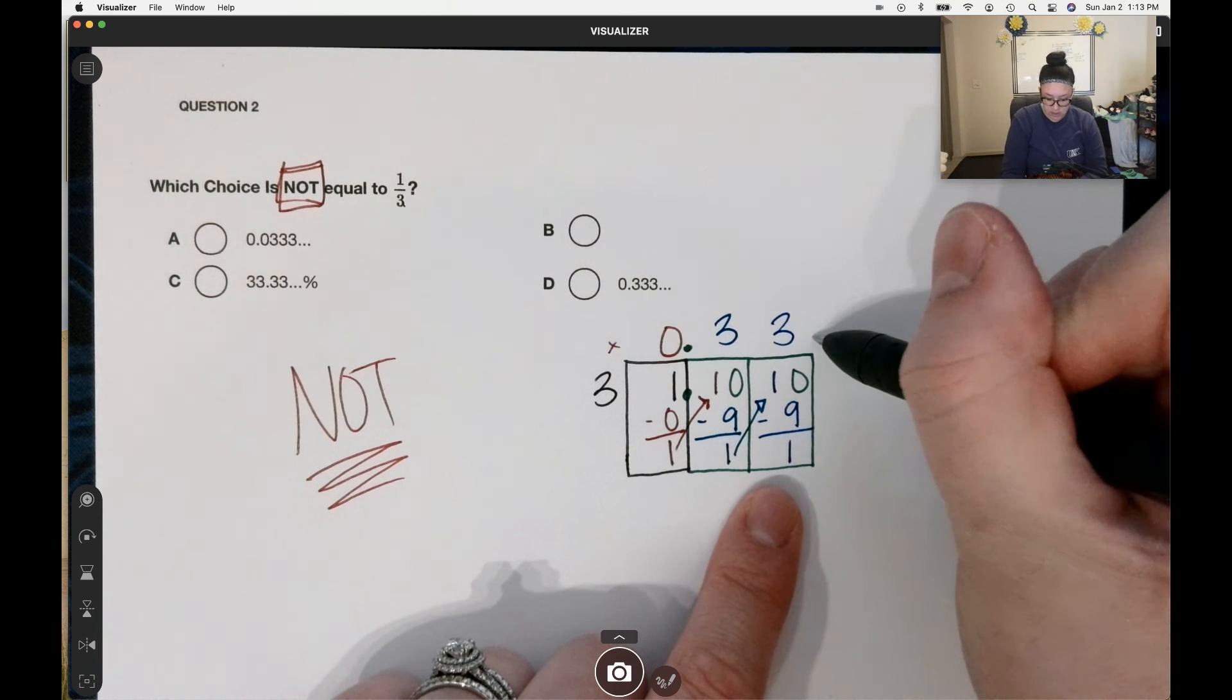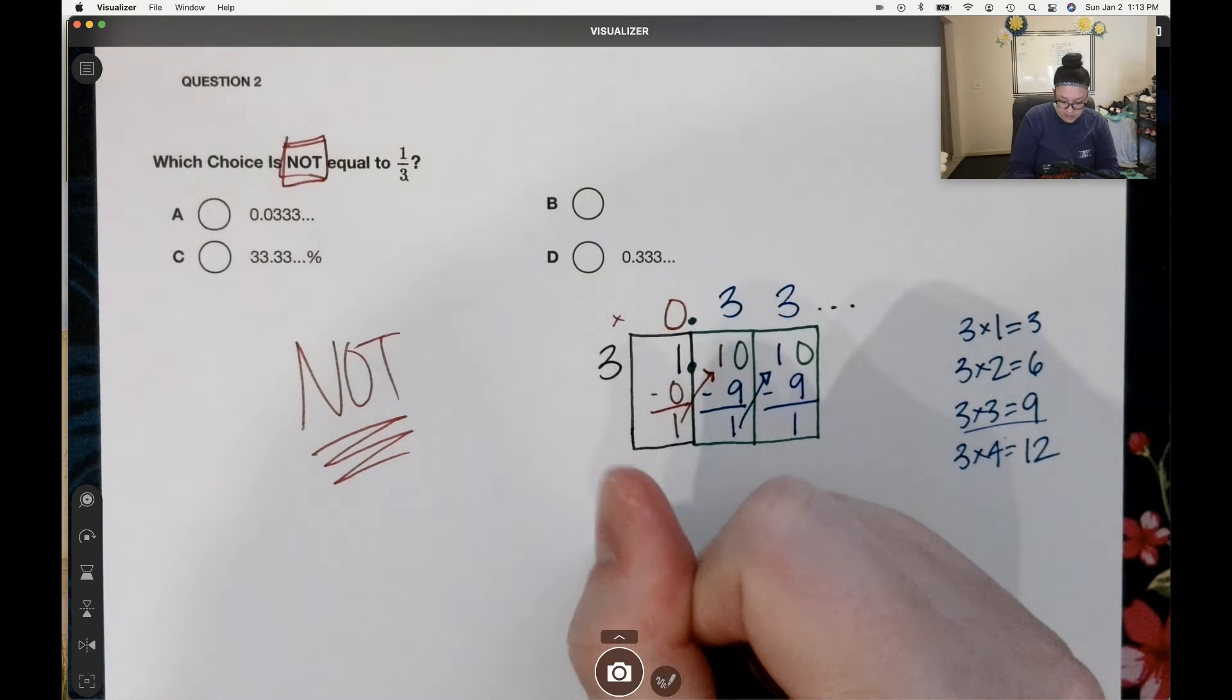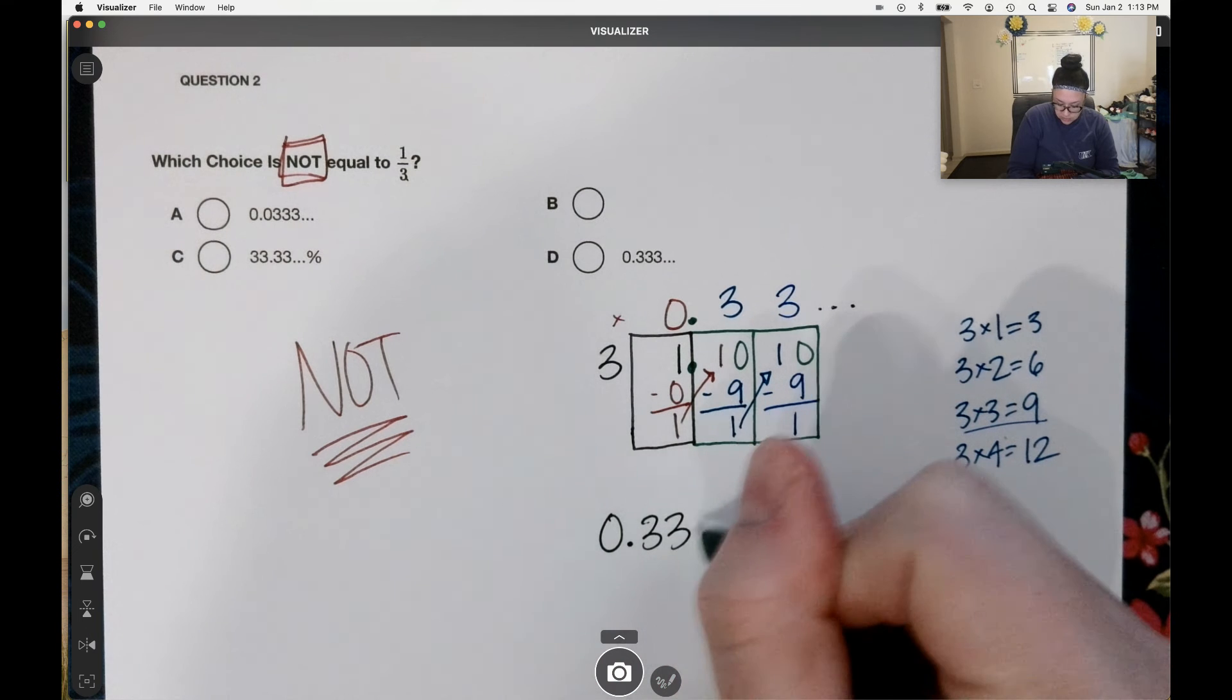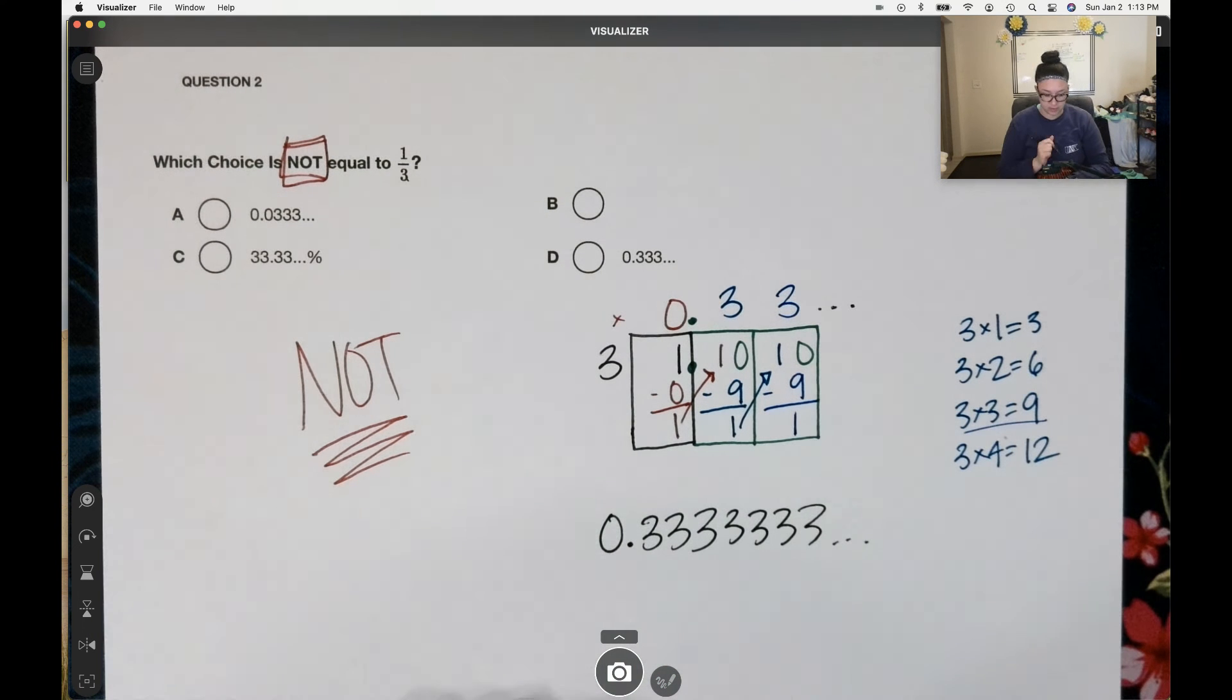So this decimal here, we see it's going to repeat. So something that I like to do, I'm going to rewrite it. Zero point three, three, three, three, three, three, three. It's going to keep on going forever and ever.